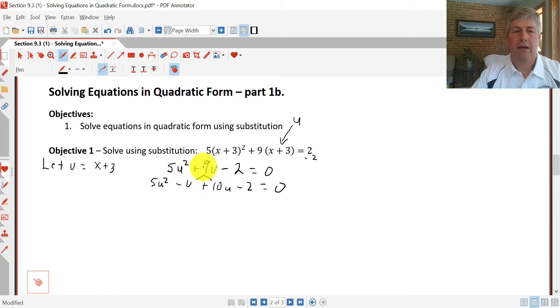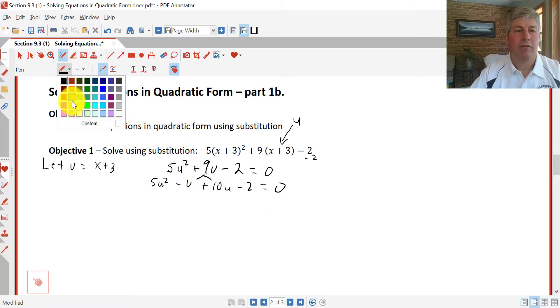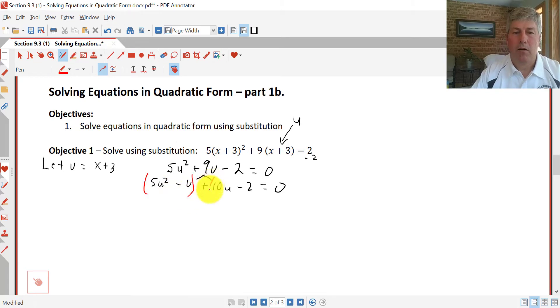So our factor by grouping gives us 5u² - 1u + 10u - 2 = 0. So we've really just split that, and then we do our factor by grouping. We'll group our first pair and group our second pair. We factor out a u out of the left side here, and we're left with u times 5u - 1. And so we've got to have 5u - 1 left behind, so we factor out our 2. And we're left with 5u - 1.